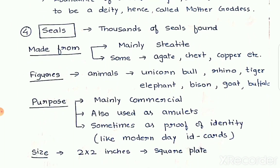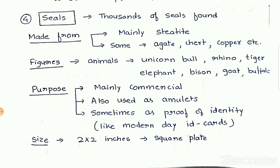The fourth important creation of Indus Valley civilization was seals. There are thousands of seals found. These seals were mainly made from steatite, a soft stone, and some were also made of agate, chert, copper and other metals. These seals had figures of animals like unicorn bull, rhino, tiger, elephant, bison, goat and buffalo.